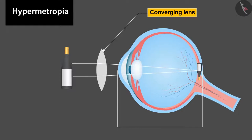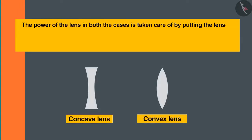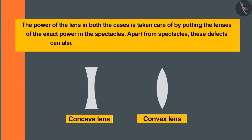The power of the lens in both the cases is taken care by putting the lenses of the exact power in the spectacles. Apart from spectacles, these defects can also be overcome through various types of surgery.